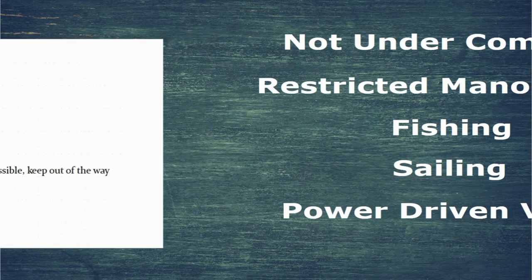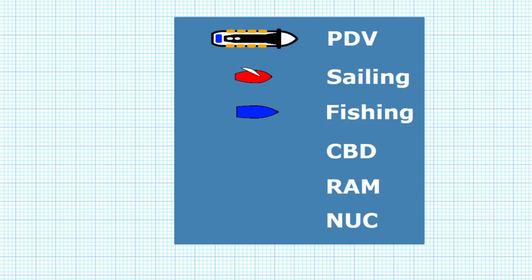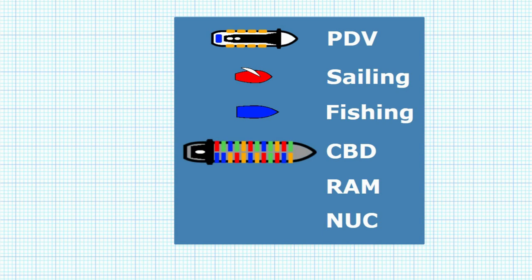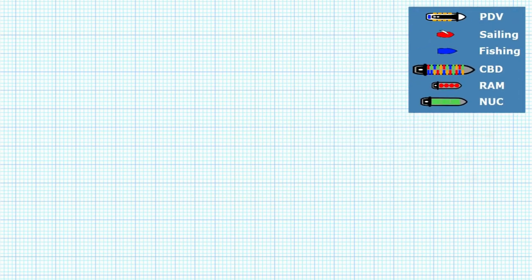Once we've got this hierarchy, what does it actually look like? We're going to use a key: the passenger vessel is power-driven, then we have the sailing boat and the fishing boat. CBD we'll take as a large container ship, restricted in ability to manoeuvre as a red tanker, and not under command as a green bulk carrier. I'll leave this key on screen and place a fleet of ships at anchor so it's easy to refer to.